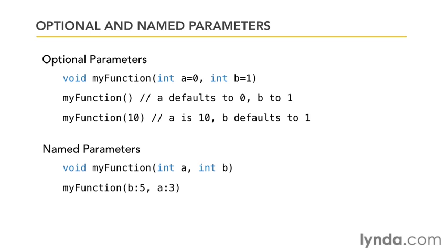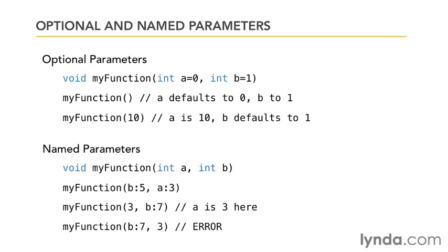You'll notice I don't have to do anything special to the function declaration — this just automatically works in C#. I can also mix named and unnamed parameters: for example, call the function with just the value 3 for A, and then B colon 7 for B. However, if you don't supply a named parameter, it has to go first. For example, doing B colon 7 and then 3 would cause an error because the compiler wouldn't know which parameter you're talking about. So you have to put the non-named parameters first.